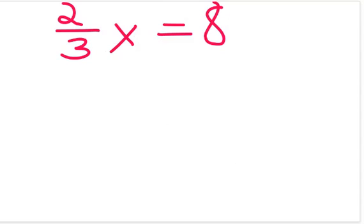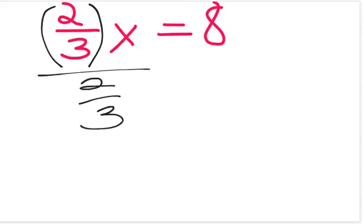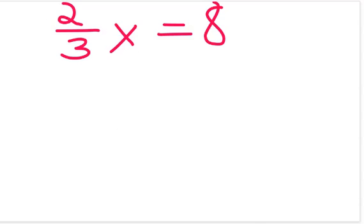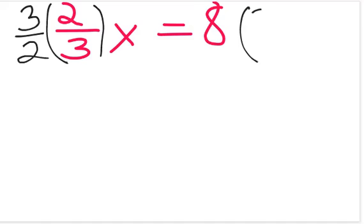But it's a little cumbersome to first multiply by the denominator and then divide by the numerator. So instead, since it's a multiplication problem, what if we divide by 2 over 3? But remember, when we're dealing with fractions, when you divide with fractions you actually multiply by the reciprocal. So let's do that instead. The reciprocal of 2 over 3 is 3 over 2, so now I'm going to multiply both sides by 3 over 2. And remember, 8 is really 8 over 1.